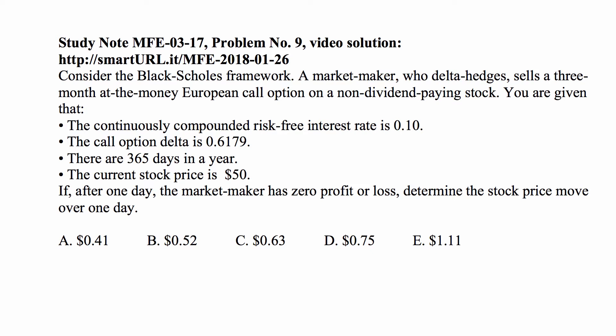You are given that the continuously compounded risk-free interest rate is 0.10 or 10%. The call option delta is 0.6179. There are 365 days in the year. The current stock price is $50. If after one day the market maker has zero profit or loss, determine the stock price move over one day.